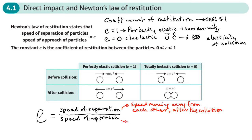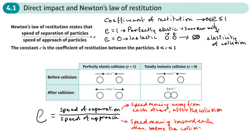The speed of approach is the speed they are moving towards each other before the collision. It all depends on whether the objects are moving in the same direction or opposite directions. Rather than use rules, let's use common sense — look at the question and work out what the speed of separation and speed of approach are, whether we need to add or subtract the velocities.